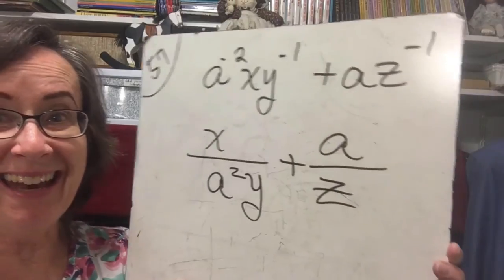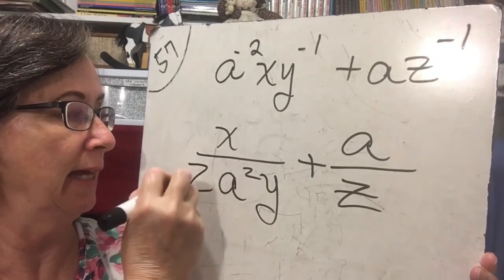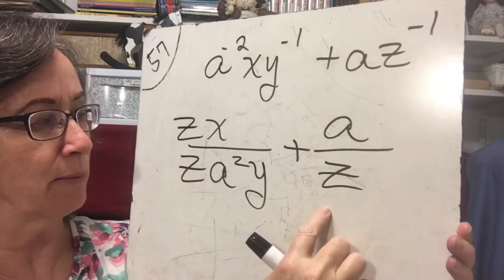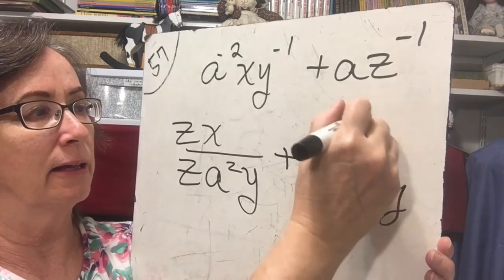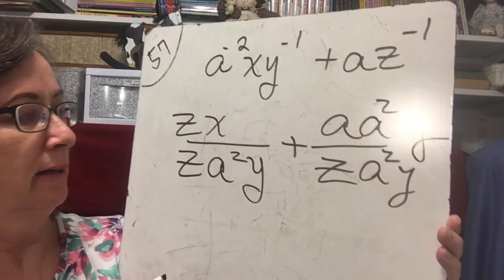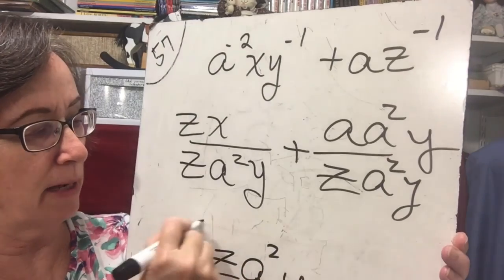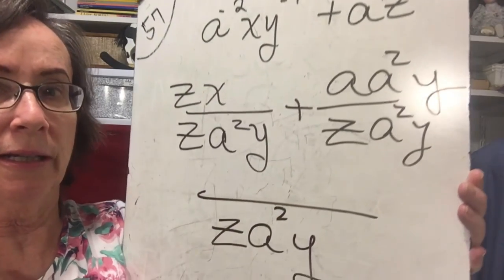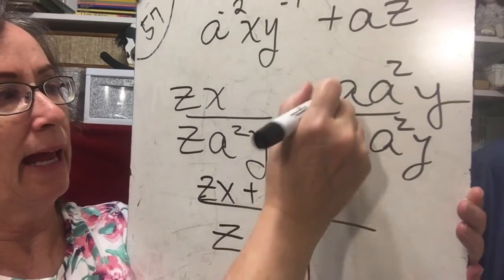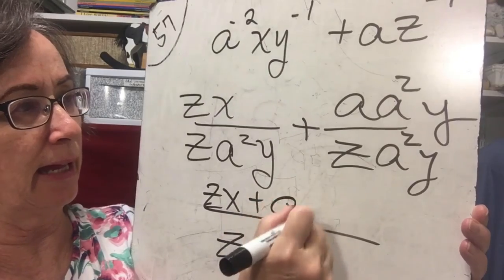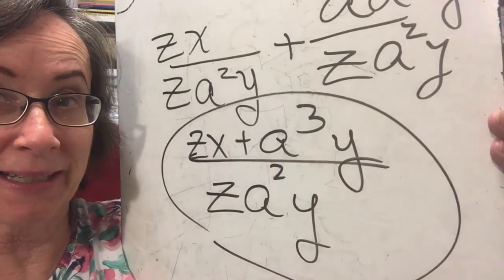Now we have nothing in common with these two denominators so this one's going to need another z. this one's going to need an a squared y a squared y a squared y and now my denominator's the same so I'm going to write down my common denominator on the denominator of my expression and zx plus a times a squared is a cubed y. and now we're ready to do our practice problems.